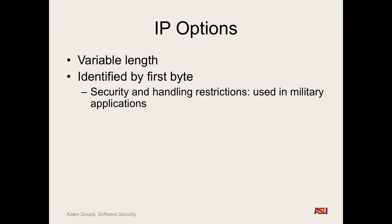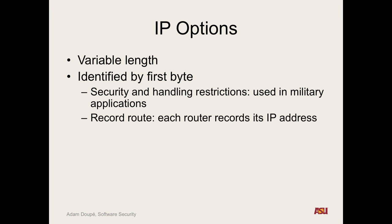One of the options specifies the security clearance level of the packet, so that the military could drop a packet if somehow a confidential packet got out to an open public network. Some of these IP options are actually for debugging purposes — you're an administrator trying to understand the incredibly complicated system of hosts and networks.